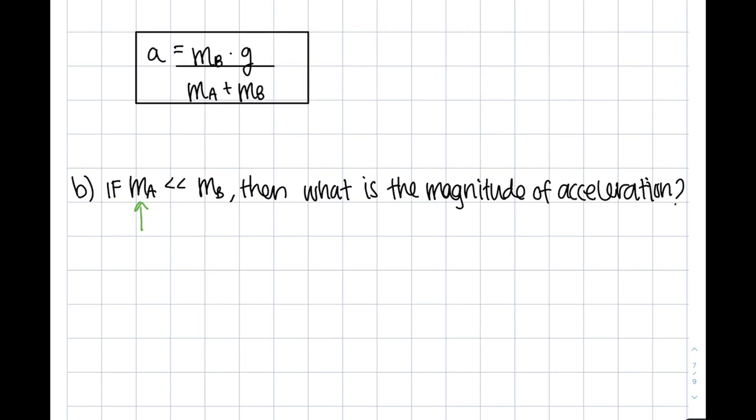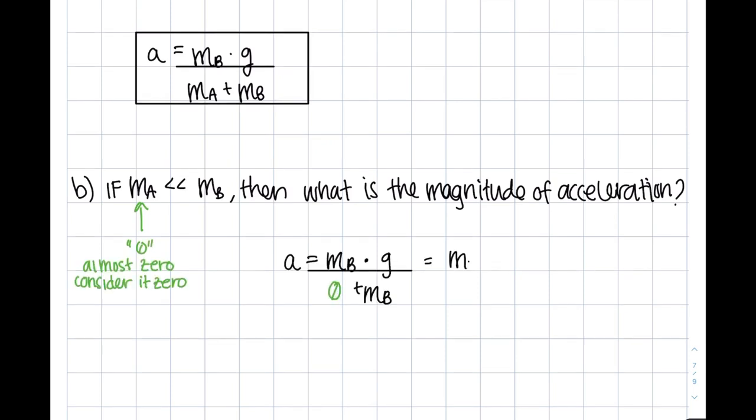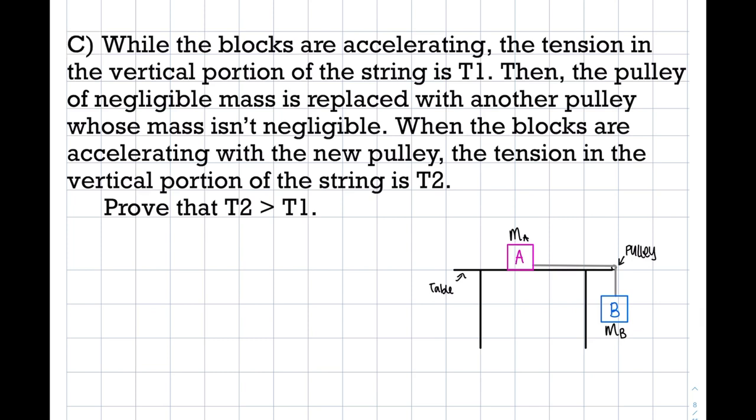Now let's consider question B. Here, mass A is really small. So mass A is now considered to be zero. We can then substitute this into the equation and we end up with, what do you know, G, which is our gravity or the acceleration at freefall. All right, we're almost there. Last question. Question C states, while the blocks are accelerating, the tension in the vertical portion of the string is T1, Tension 1. Prove that T2 is greater than T1. For any word problem, especially longer ones, I like to briefly focus on some keywords to get a better idea of what's going on.